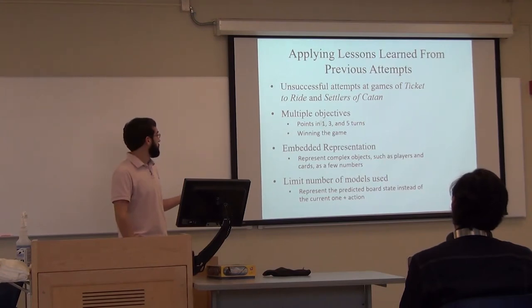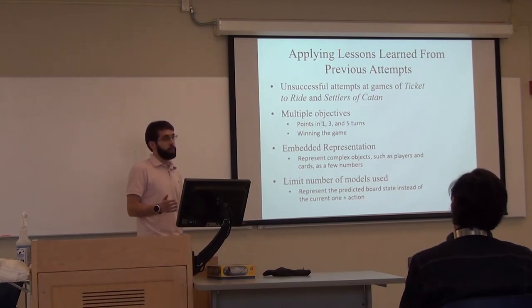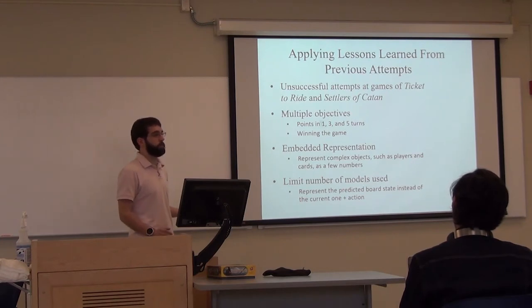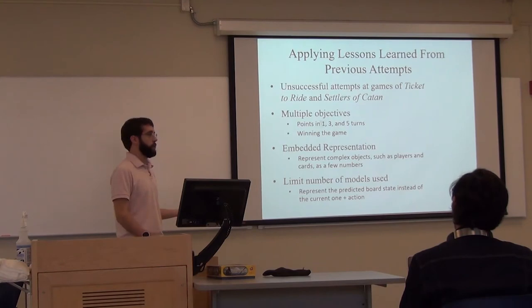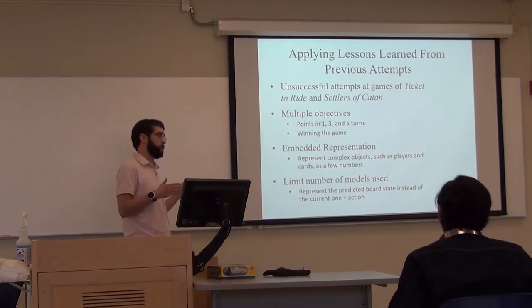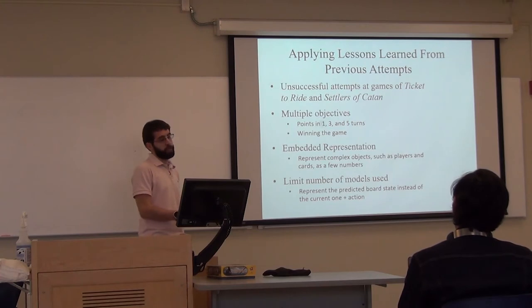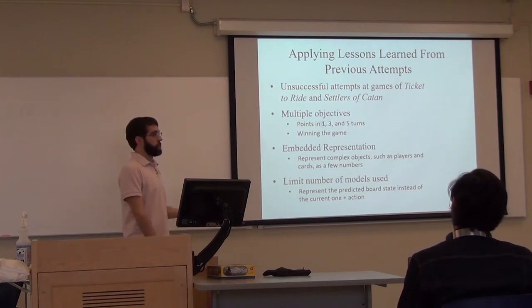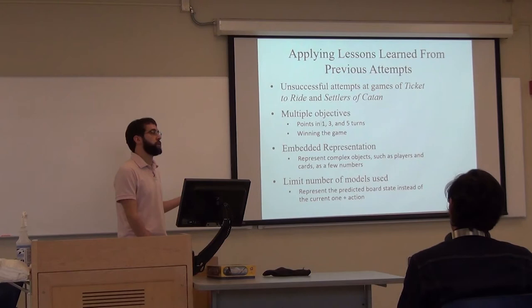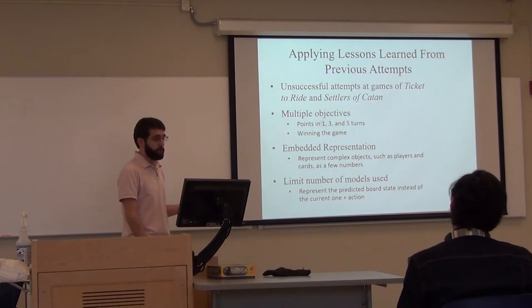In this game, one thing I did is I decided to look at more things than just winning the game. I decided to look at how many points the player would have in one turn, in three turns, and in five turns. A one turn, that's a short-term goal. Three turns, it's a little bit less of a short-term objective. In five turns, it's closer to long-term planning. Obviously, winning the game is the longest-term planning you can get. But sometimes nudging it in that direction is kind of hard, so you need to give it some short-term goals as well as long-term goals.